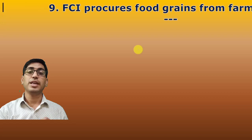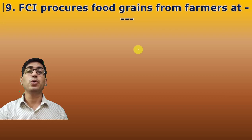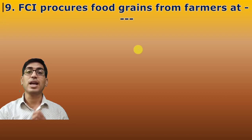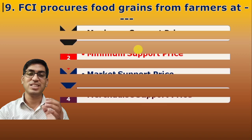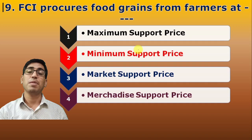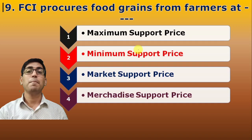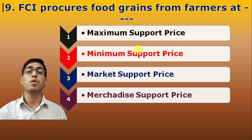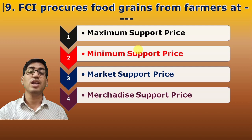Ninth question: FCI procures food grains from farmers at what price? Options include Maximum Support Price, Market Support Price, and Minimum Price. The answer is Minimum Support Price (MSP) — that is the price at which FCI procures food grains from farmers.